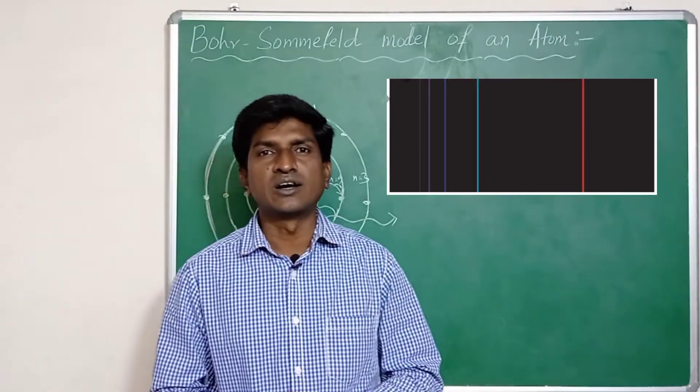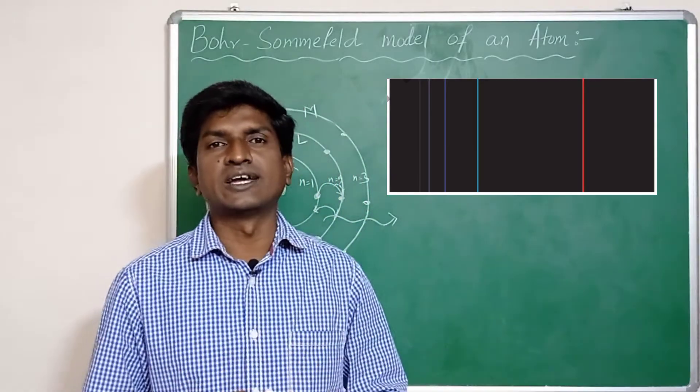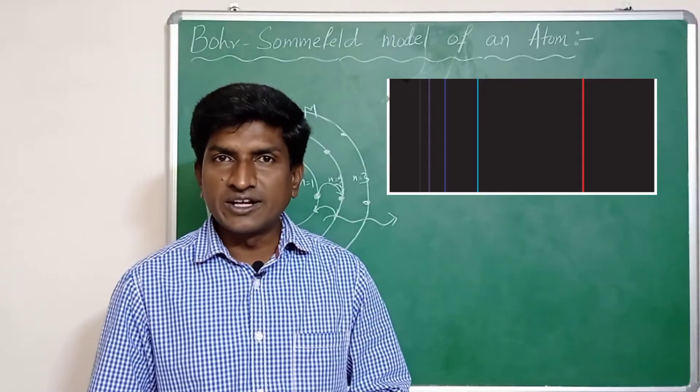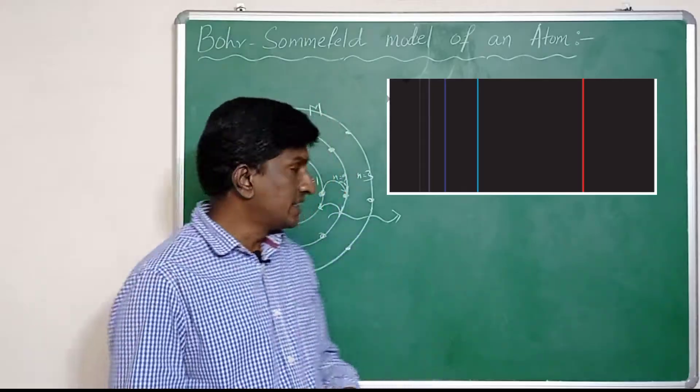To explain this fine spectral line, Sommerfeld introduced elliptical orbits and he retained Bohr's first orbit circular. There is no splitting of Bohr's first orbit.